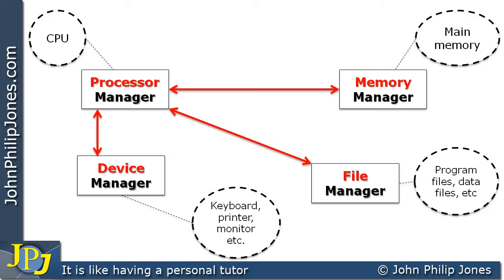There will also need to be cooperation between the memory manager and the file manager. A typical example is an application that is too large to all be loaded at once into the random access memory. When there is an attempt to execute a machine code instruction that's not in memory, it says 'I haven't got that bit of the program in my memory — I'll go and get it from the file.' This is called a page fault. The file manager knows where the program is on the disk and the memory manager knows where to put it in memory.